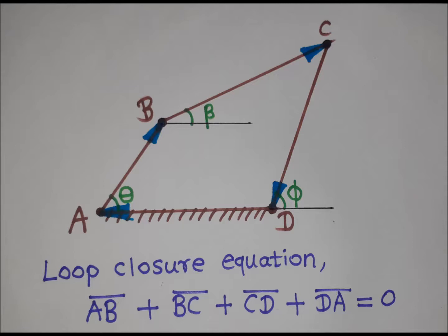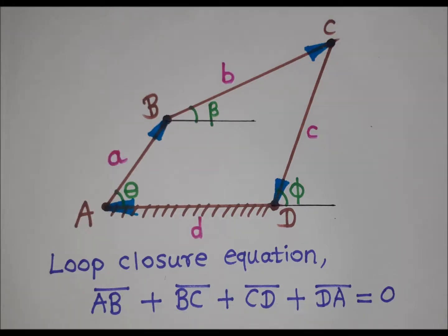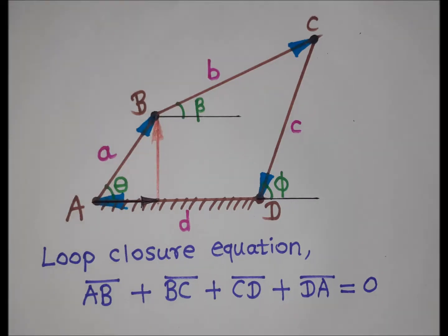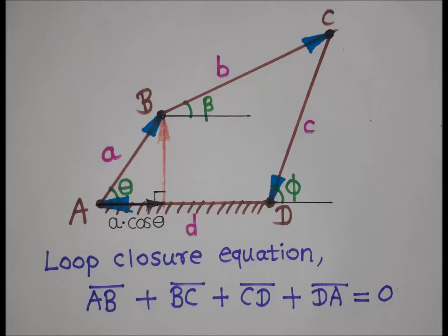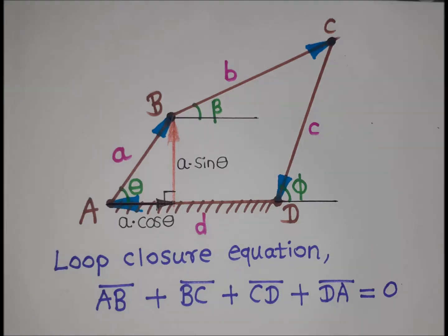The loop is taken in a clockwise sense. Small letter 'a' represents the length of the input link, 'b' represents the length of the coupler, 'c' represents the length of the output link, and 'd' is the length of the fixed link. Vector AB can be resolved into two components: the horizontal component is A·cos(theta), directed to the right, and the vertical component is A·sin(theta), directed upward.